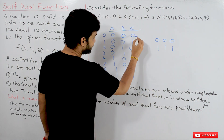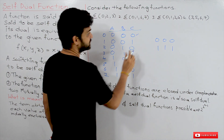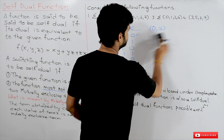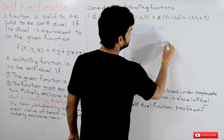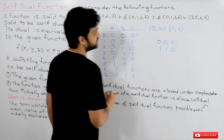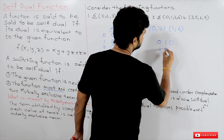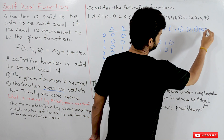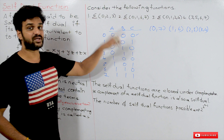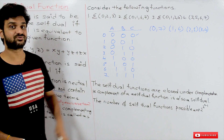If you take a term and complement it, the term obtained is called its mutually exclusive term. So 0 and 7 are mutually exclusive terms. If you take 001 (minterm 1), its complement is 110 (minterm 6) — so 1 and 6 are mutually exclusive terms. Similarly, 2 (010) and 5 (101) are mutually exclusive terms, and 3 (011) and 4 (100) are mutually exclusive terms.